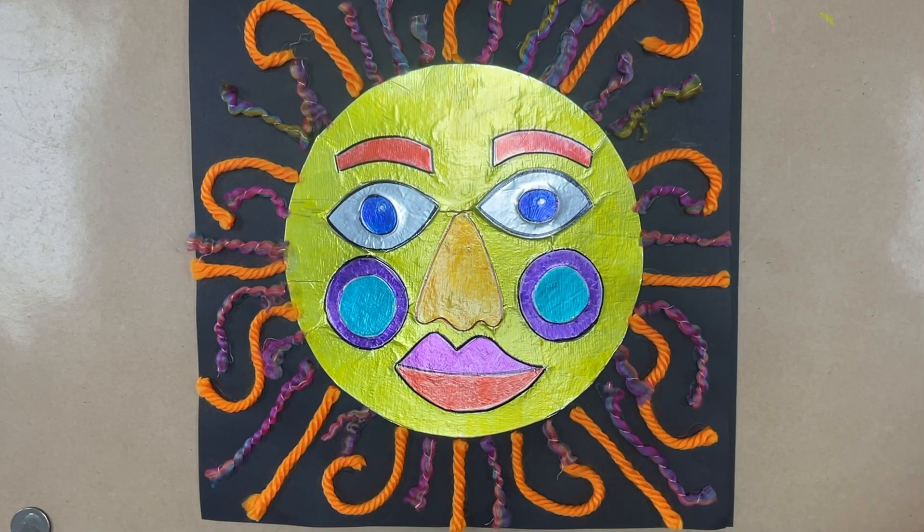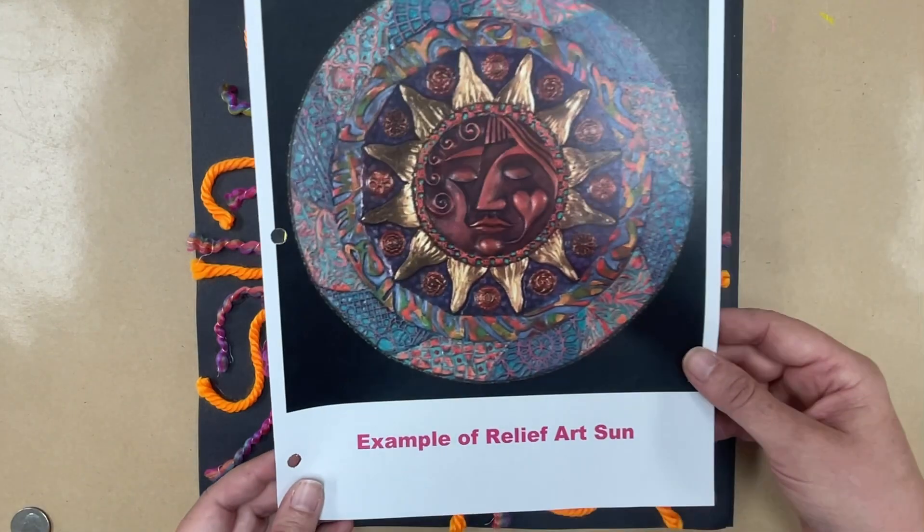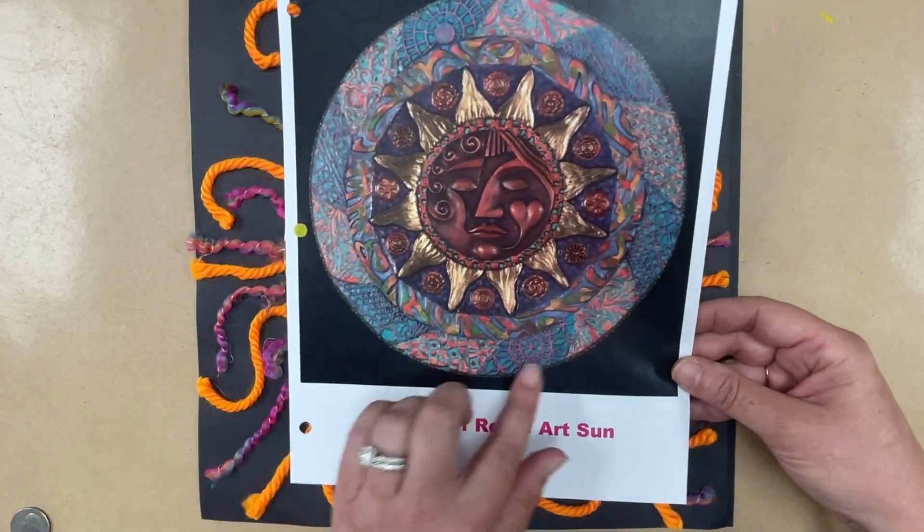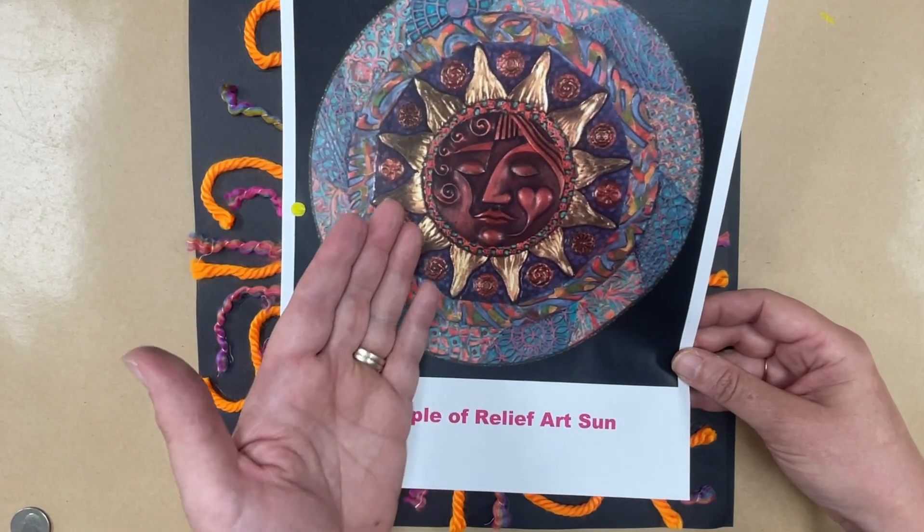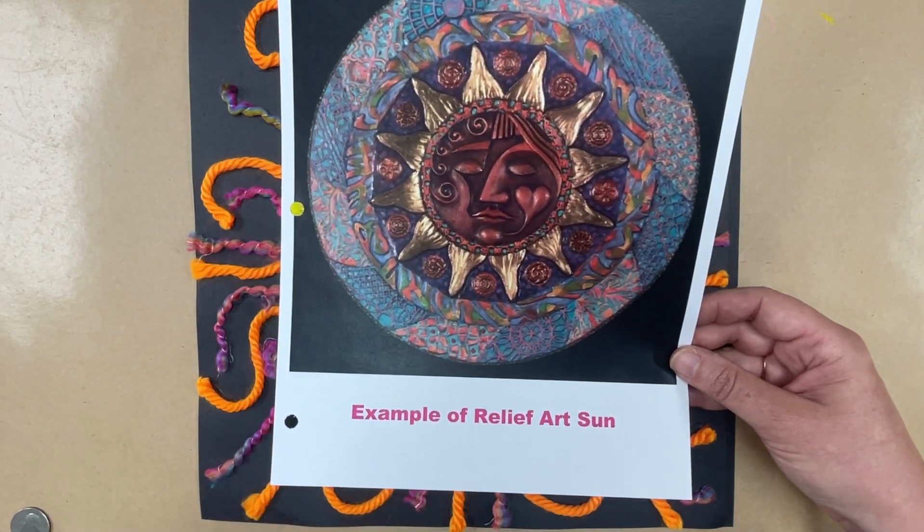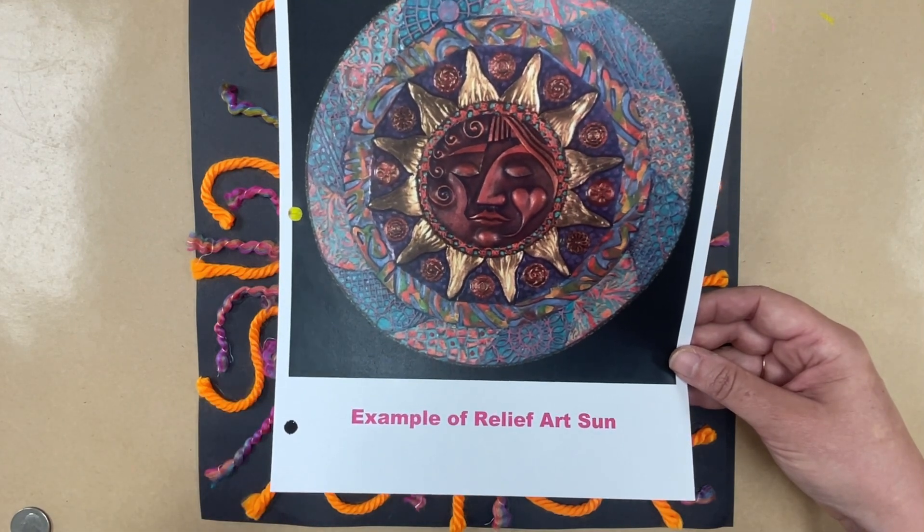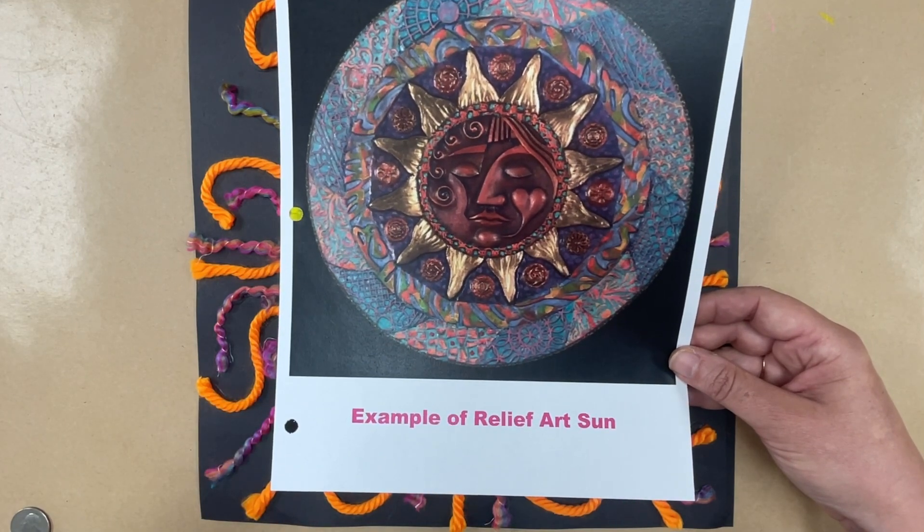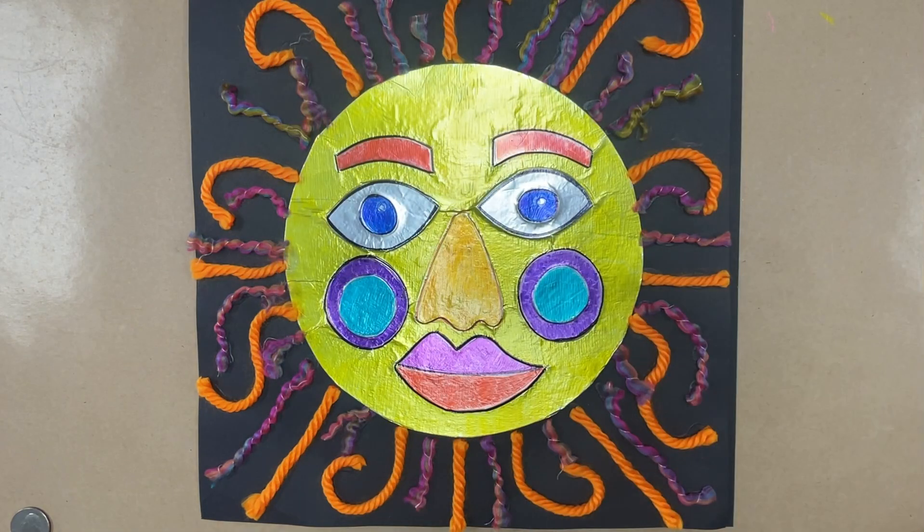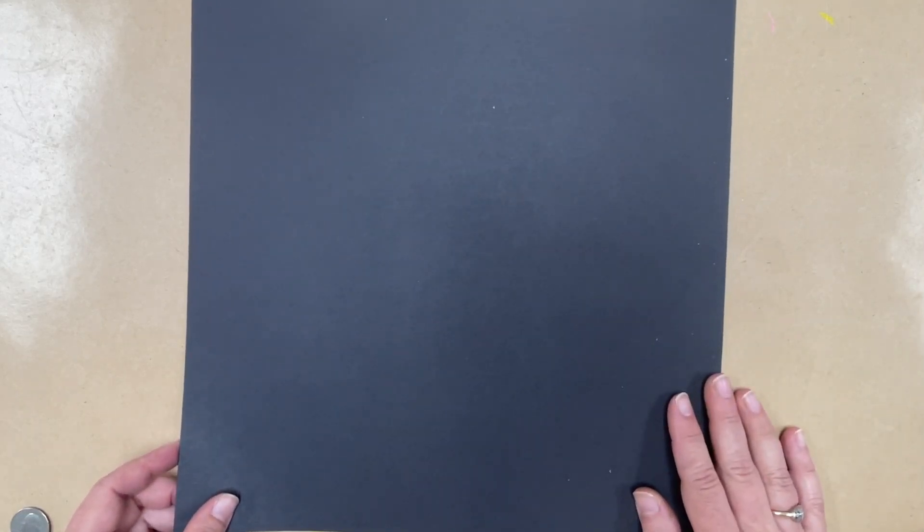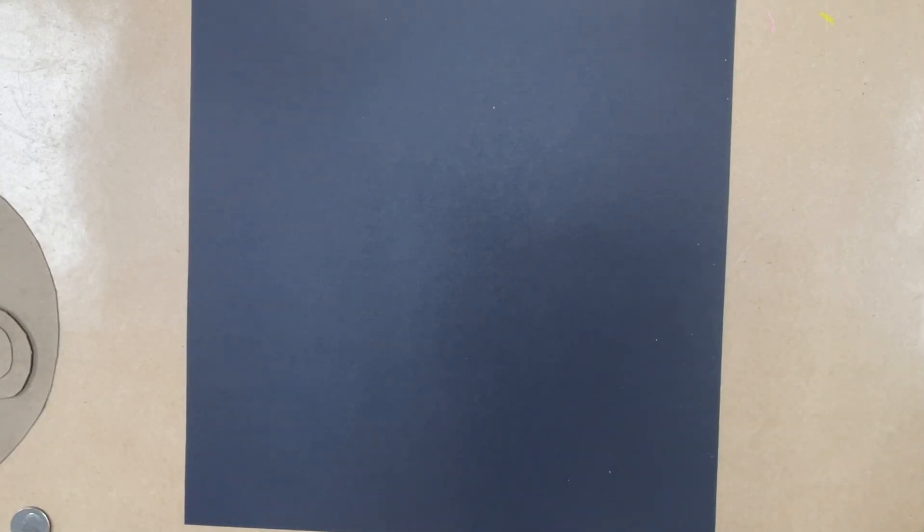I wanted to show you another example of a relief art sun. Isn't that pretty? So you can see that it's on a solid background, but you can tell even just by looking at this picture that areas of it kind of stand out a little bit more than others. And I love those pretty metallic colors that they used. Okay. So what we're going to do is you're going to have a piece of 12 by 12 black construction paper. You're going to put your name label on the back and then you're going to each get a piece of cardboard, two pieces of cardboard.